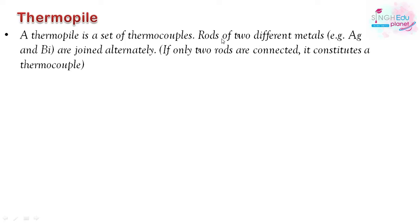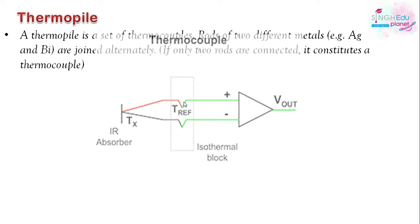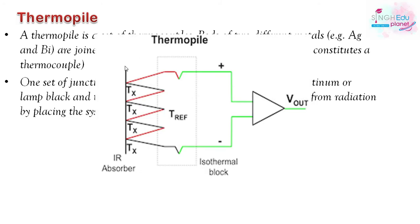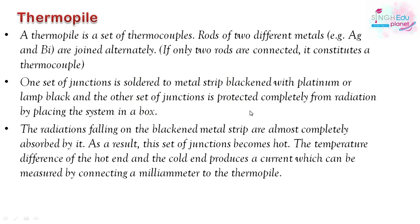A thermopile is a set of thermocouples. Rods of two different metals, such as silver and bismuth, are joined alternately — two rods joined form a thermocouple. One set of junctions consists of a metal strip that is black-coated with platinum and lamp black, and the other set of junctions is protected by placing them in a box. Radiation falls on the carbon black-coated junctions and they absorb the radiation.